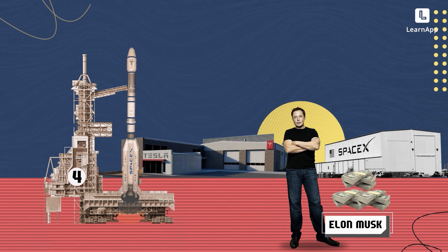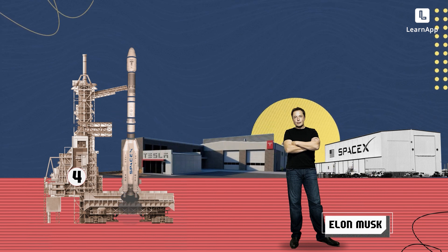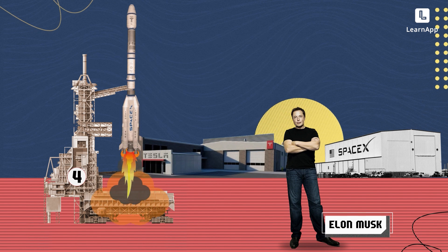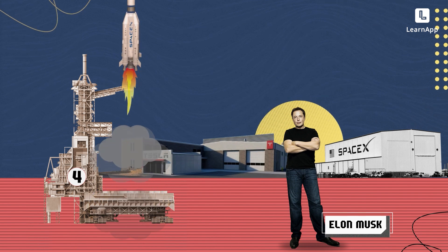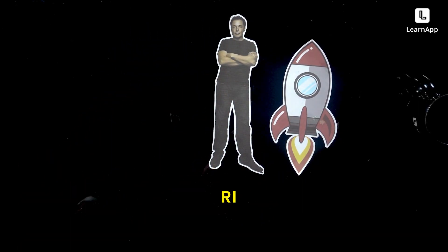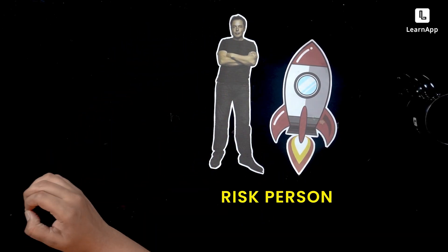He literally risked all his money on this rocket company. But the fourth launch actually did pretty well — his money was saved — and today SpaceX is doing pretty well, where NASA is actually a customer. This is the profile of a super high-risk person.